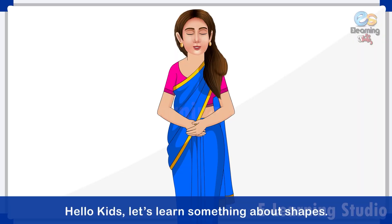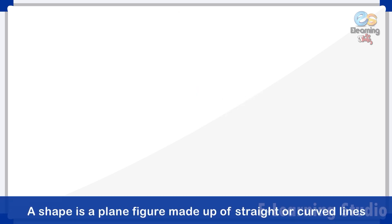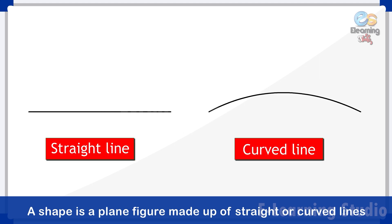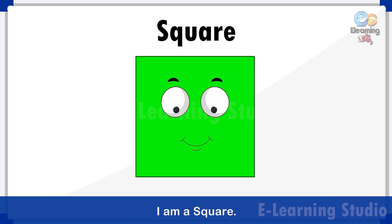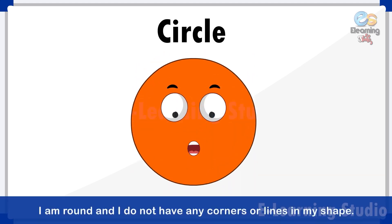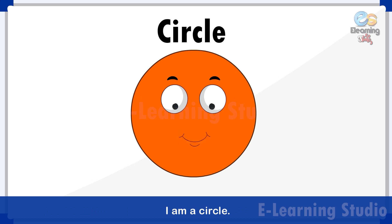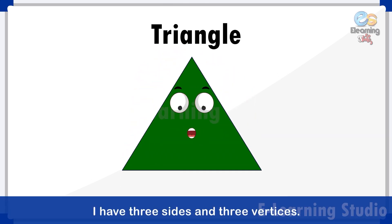Shapes. Hello kids! Let's learn something about shapes. A shape is a plain figure made up of straight or curved lines. Let's see some basic shapes. Square: I have four equal sides and four corners called vertices — I am a square. I am round and I do not have any corners or lines — I am a circle. I have three sides and three vertices — I am a triangle.